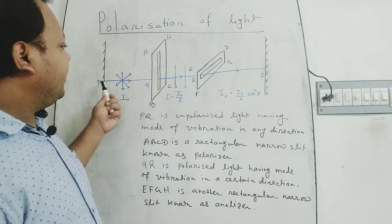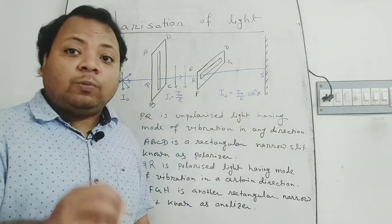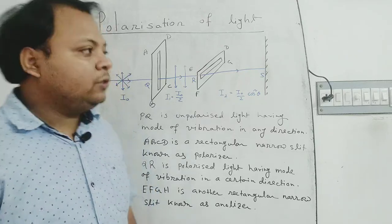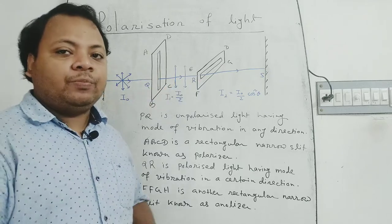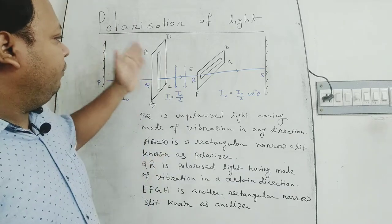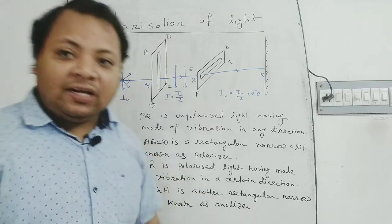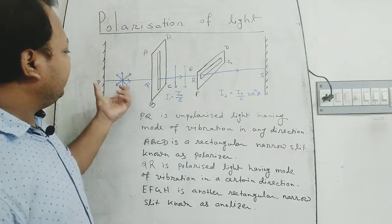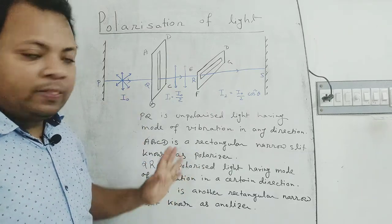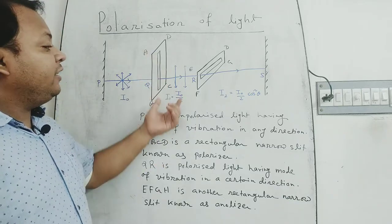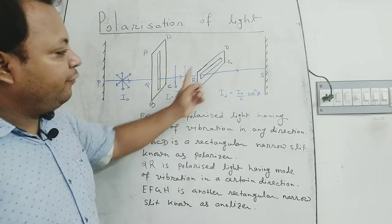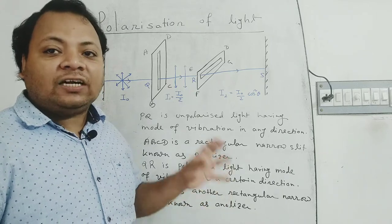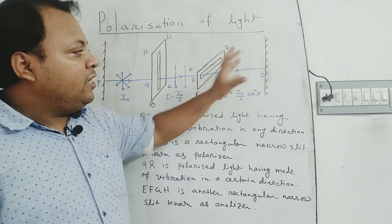Polarization can be observed in case of transverse waves. In case of light waves, this phenomenon can be demonstrated by Tourmaline crystals. Replacing these two slits, we can place two Tourmaline crystals and let monochromatic light be passed through these two Tourmaline crystals. Along the PQ portion, the intensity of light is maximum. After passing through the polarizer, the intensity of light becomes half. And if the analyzer is normal to the polarizer, then after that we can see a dark area — we cannot get light.